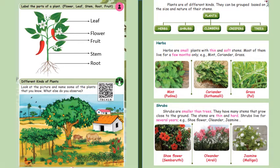Shrubs are smaller than trees. They have many stems that grow close to the ground, and the stems are thin but hard. They live for several years like shoe flower, oleander and jasmine.